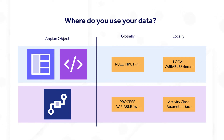Rule inputs and local variables can be passed between parent and child interfaces and expressions, but rule inputs are the only way to pass data to and from process models.